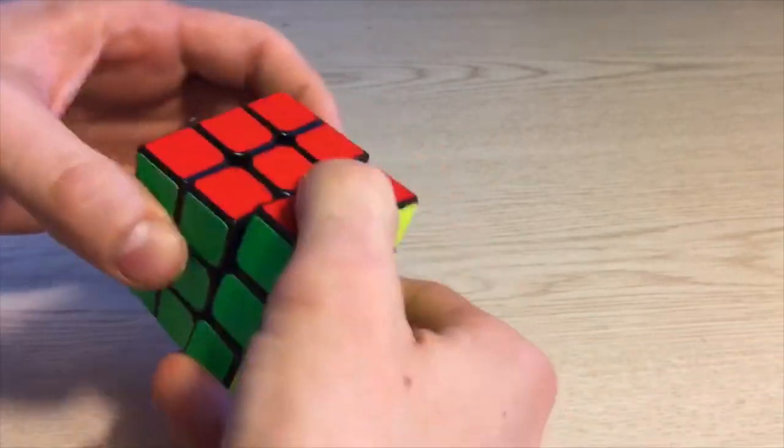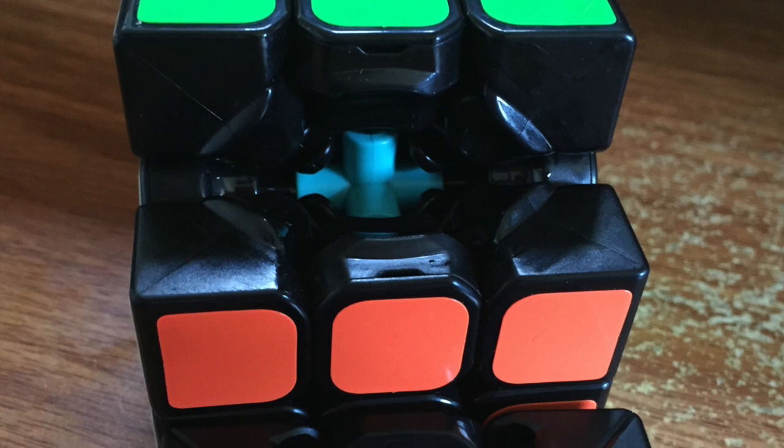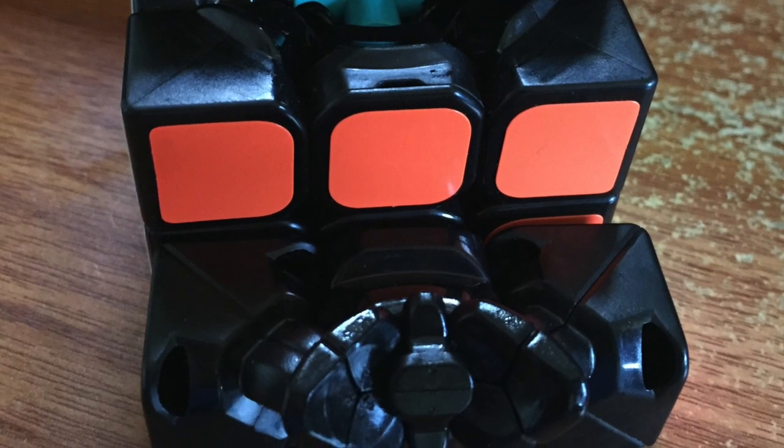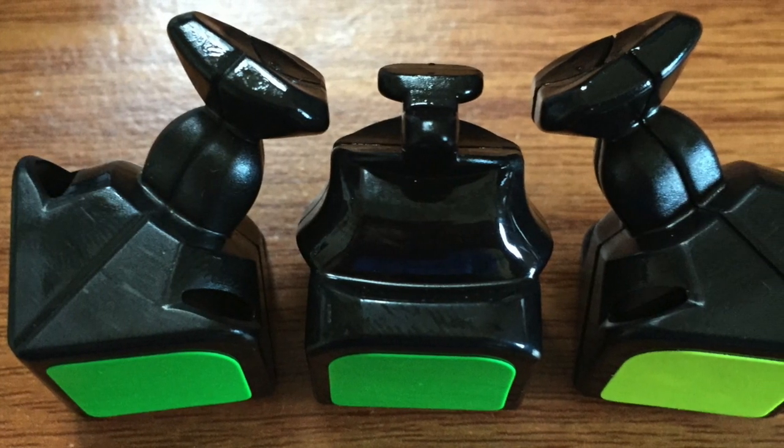Moyu noted in its initial Facebook post about the cube that Hualong adopts a curved surface into its inner structure which makes it feel better than the Weilong when you solve fast. Hualong's corner cutting is about 60 degrees and its reverse corner cutting is about 30 degrees. Pop is not easy.